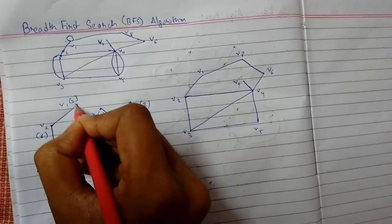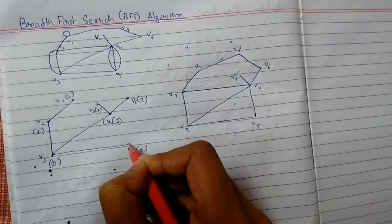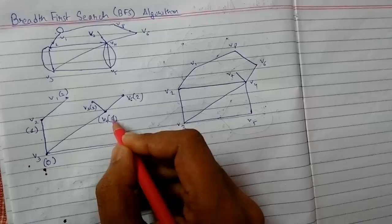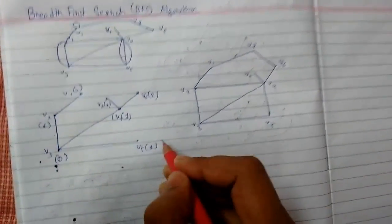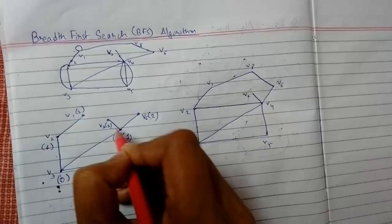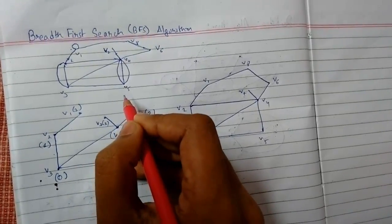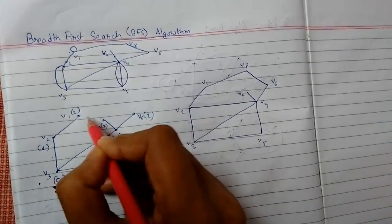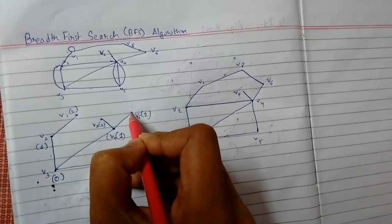For v4, if you will join v5 and v4, it will become a circuit, so we will not do that. All the level 2 edges will be drawn, but we should not make it a circuit.